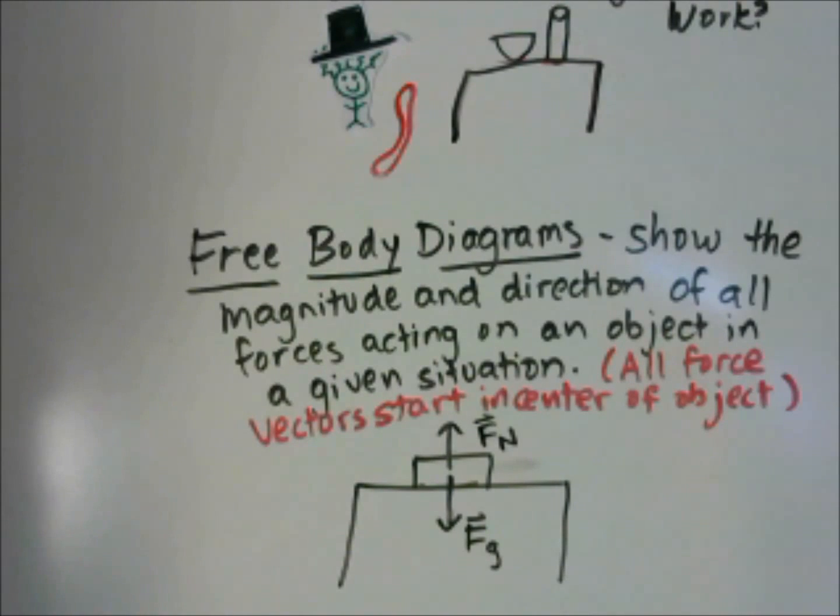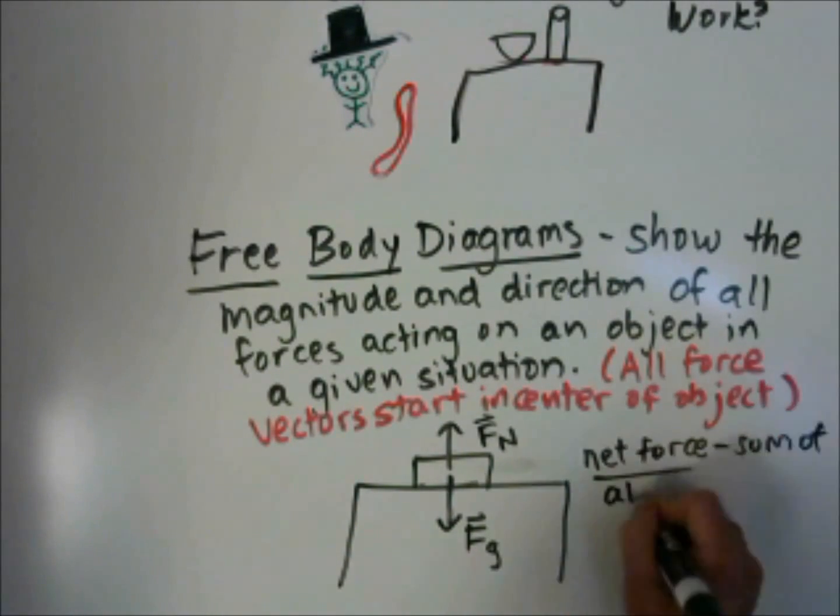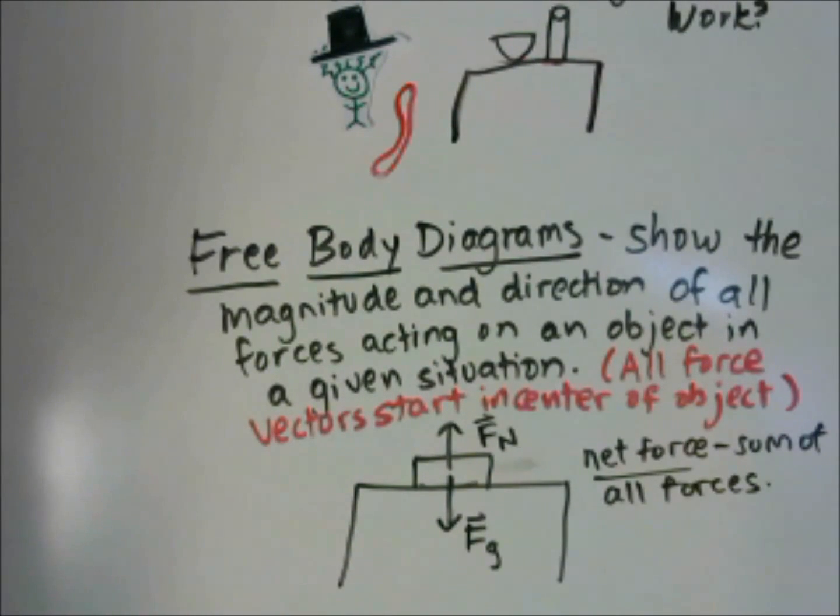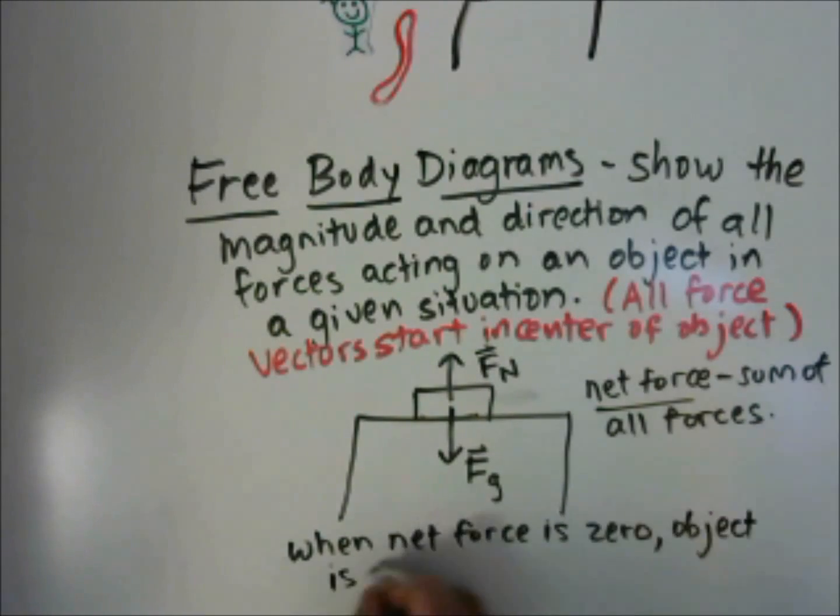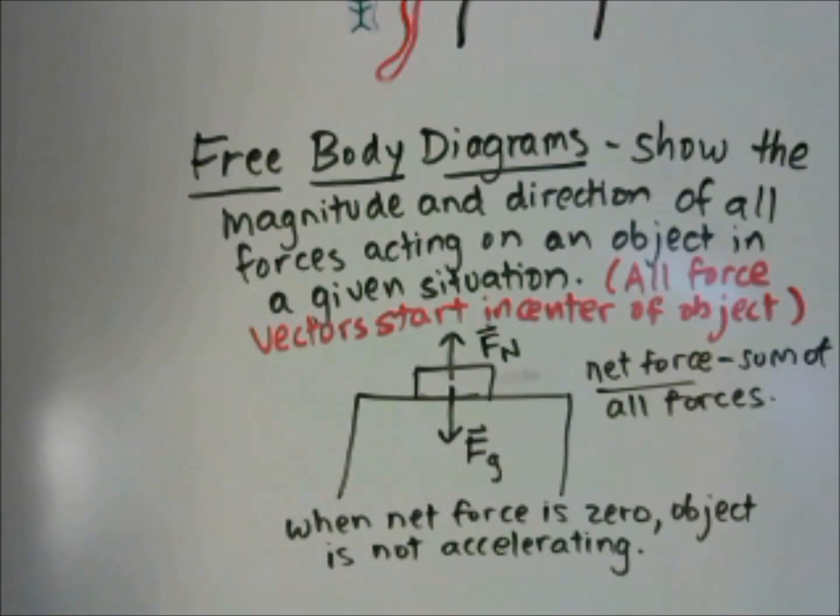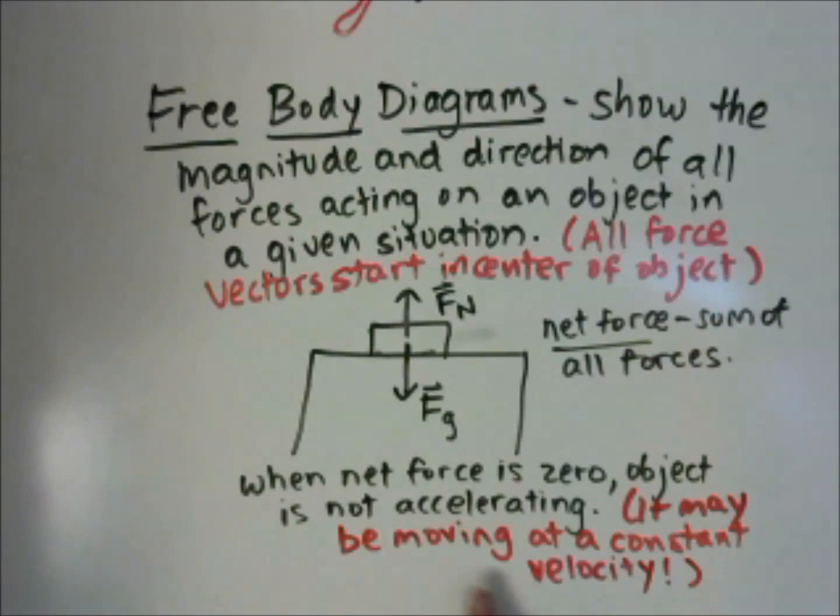So we now have two forces, the normal force up and the force of gravity down. The forces are balanced. In this case, our net force is zero. The net force is the sum of all forces. When the net force is zero, the object is not accelerating. Now, it's important to know that it may be moving, it's just not accelerating. The object may be moving at a constant velocity, and the net force is zero.